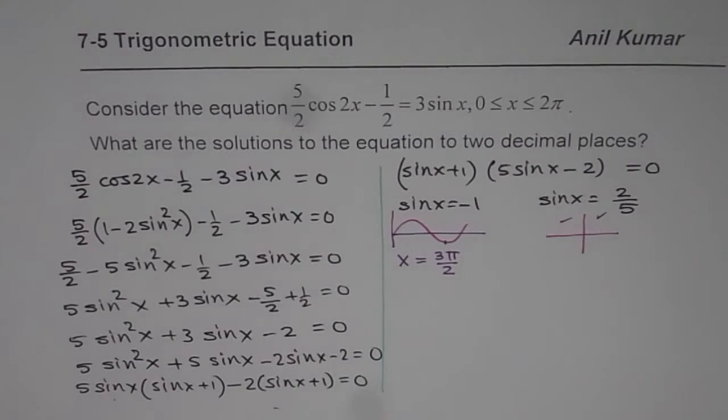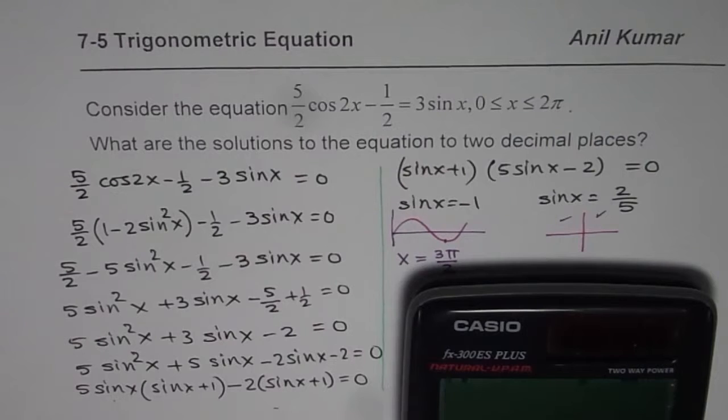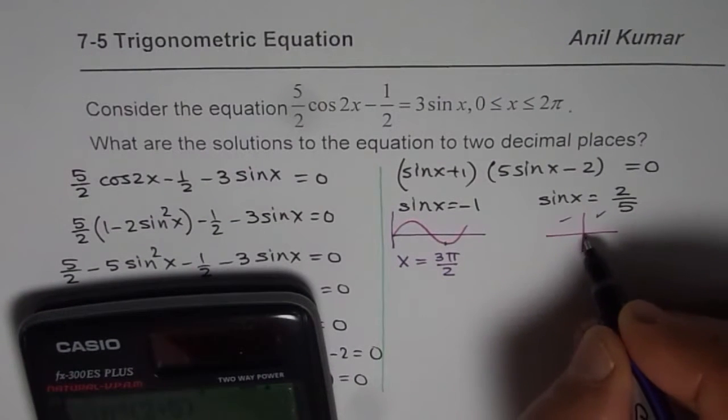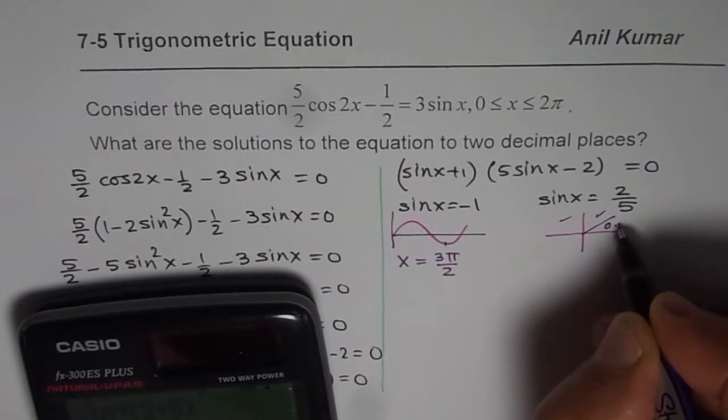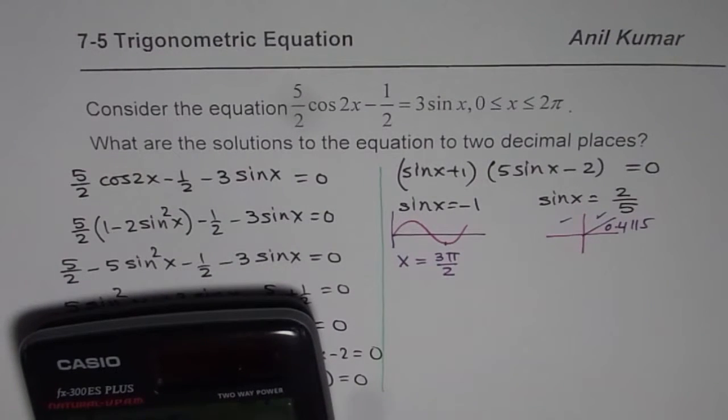Now to find when sin(x) is 2/5, we will take help of our calculators set in radians. So we will say sin inverse of 2 divided by 5 equals 0.4115. So acute angle here is 0.4115. That is one solution.